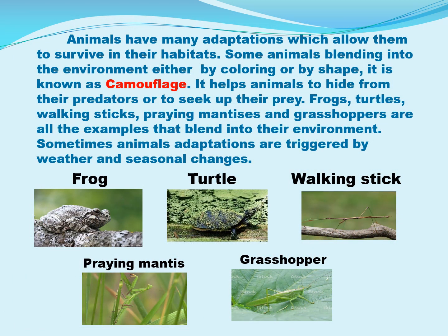Animals have many adaptations which allow them to survive in their habitats. Some animals blend into the environment either by coloring or by shape — this is known as camouflage. It helps animals to hide from their predators or to sneak up on their prey. Frogs, turtles, walking sticks, praying mantises, and grasshoppers are all examples that blend into their environment. Sometimes, animal adaptations are triggered by weather and seasonal changes.